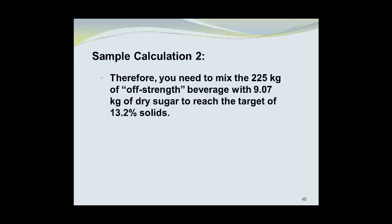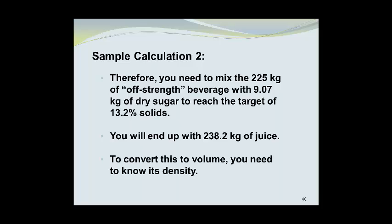Therefore, you need to mix the 225 kilograms of off-strength beverage with 9.07 kilograms of dry sugar to reach the target of 13.2% solids. You will end up with 238.2 kilograms of juice beverage, and you will need to have its density value to convert it to a volume. But once again, that is outside of the scope of this presentation.